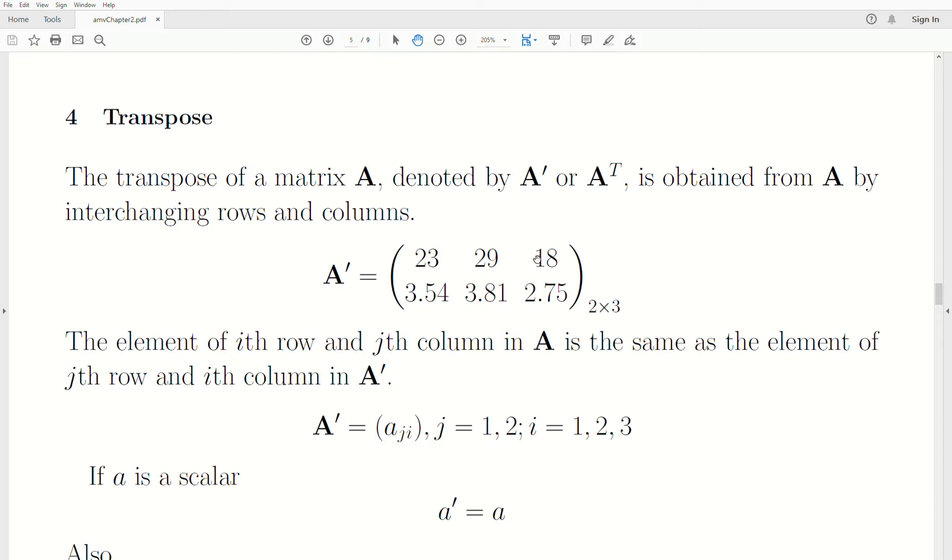So this first row in A transpose was the first column in A. The second row here was the second column in A.